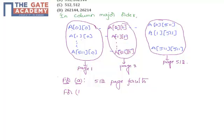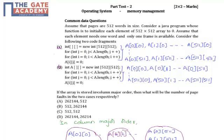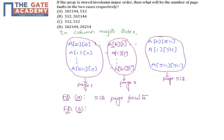Now let us see the number of page faults for Code Fragment B. For Code B, we first access A[0][0], then A[0][1]. There is no element in main memory initially, so A[0][0] causes a page fault and we get it from secondary memory. Next, A[0][1] requires replacing page 1 with page 2. For every single element accessed, we must load a new page, giving 512 × 512 = 262144 page faults.